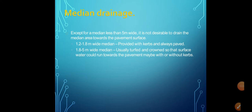For median drainage: in a median less than 5 meters wide, it is not desirable to drain the median towards the pavement surface. For a 1.2 meter wide median with curbs, it is always paved. For medians of 1.8 to 5 meters wide, turf or ground cover is used so that surface water does not run towards the pavement, with or without curbs.